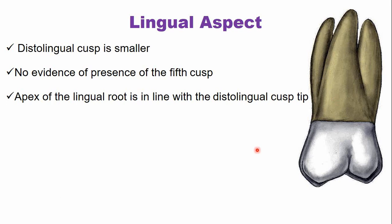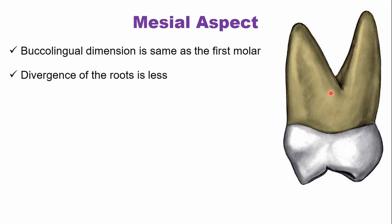From the mesial aspect, the buccolingual width of the crown is the same as that of the maxillary first molar. The root divergence from the mesial aspect is also less compared to the first molar. The cervical line has a slight convexity toward the marginal ridge.